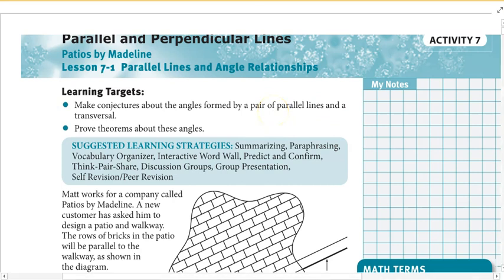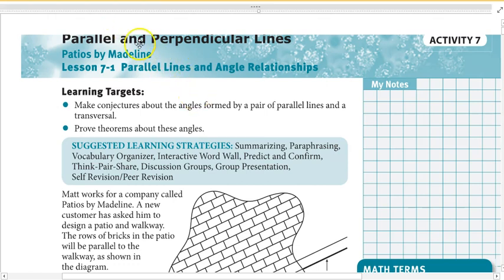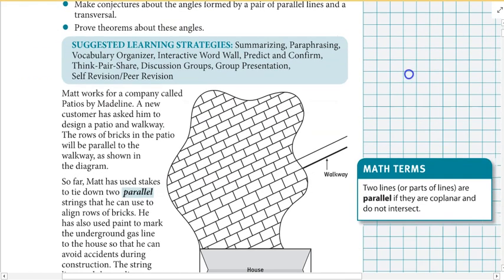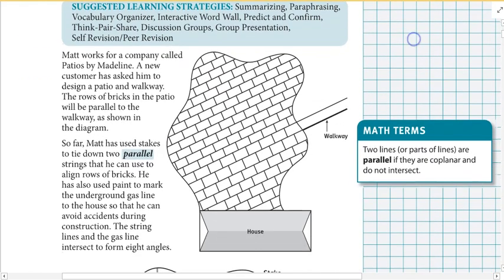We have quite a few important goals here today — we're definitely going to be using them a lot later on. So the first thing we come across: Matt works for a company laying some patio bricks. He's going to use some parallel lines here to help him.